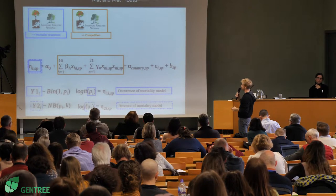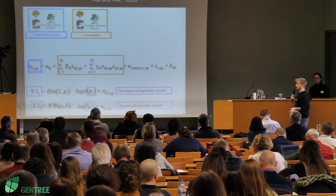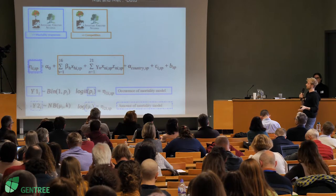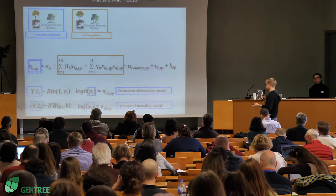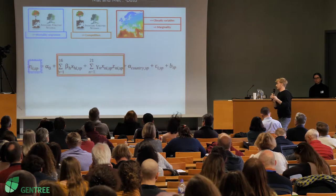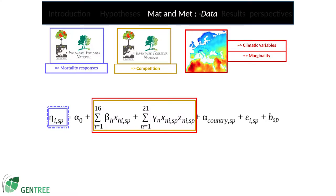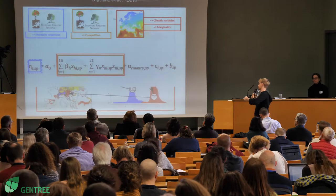From my national forest inventories data, I was also able to calculate competition indexes — interspecific and intraspecific competition indexes — that were included in my model as co-variables. Then I included climatic variables: one temperature-related variable and one precipitation-related variable. And I also calculated a marginality index that was included as a qualitative variable in the model.